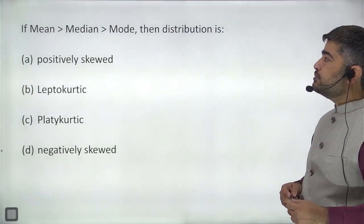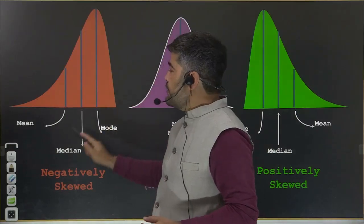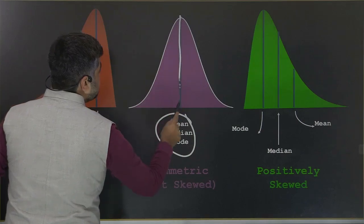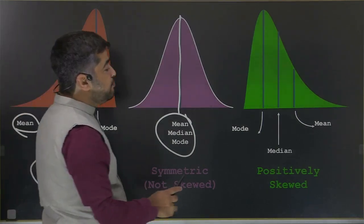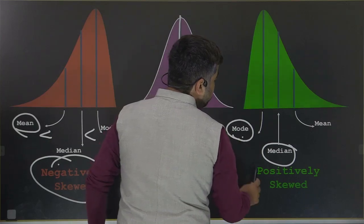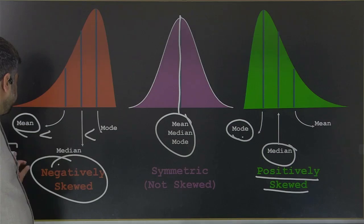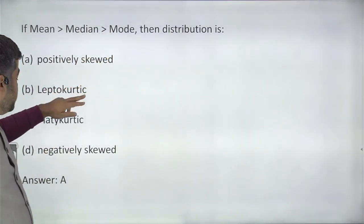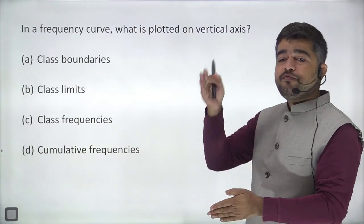Question three: if mean is greater than median, which is greater than mode, then the distribution is positively skewed. When mean, mode, and median are the same, it is a normal distribution. When mean is less than median, which is less than mode, it is negatively skewed. When mean is greater than median, which is greater than mode, it is positively skewed. Answer will be A.